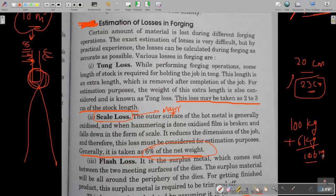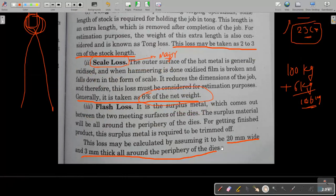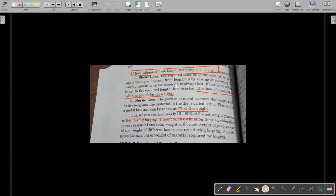Next is flash losses. You know the flash is additional material that we provide in a thin blade form to ensure that your cavity that you are forging is properly filled. Otherwise flash shows, if you do not provide the flash then you cannot ensure in case of closed die forging that the cavity is properly filled by material or not. So generally we take 20mm wide and 3mm thick flash around the periphery.